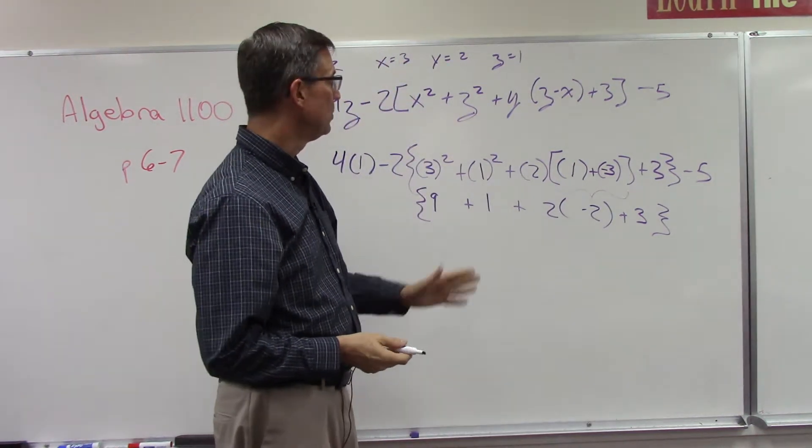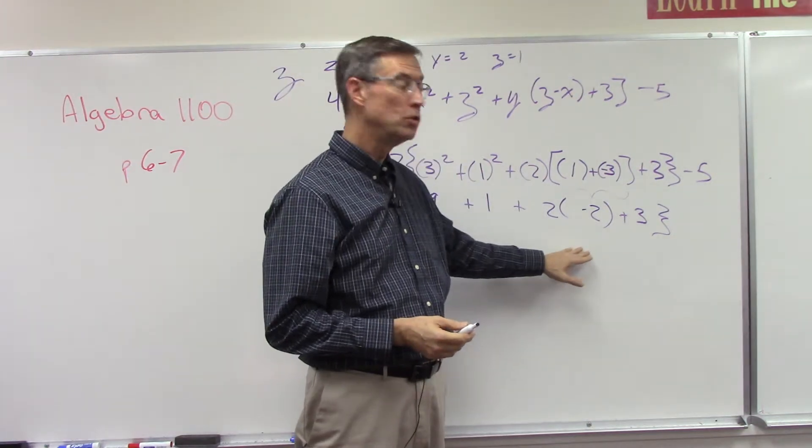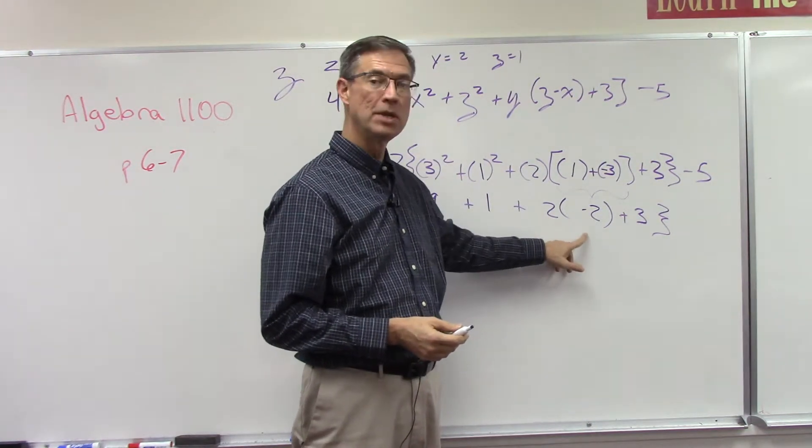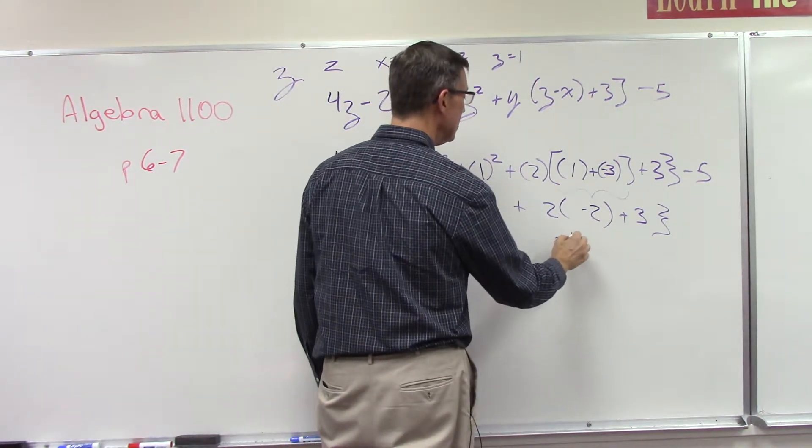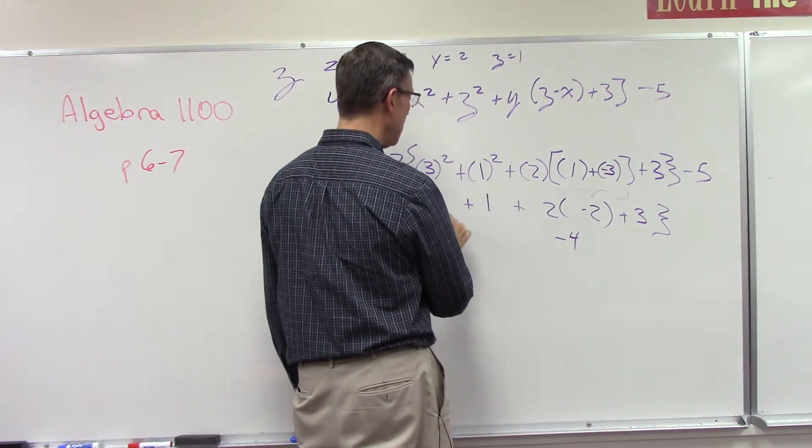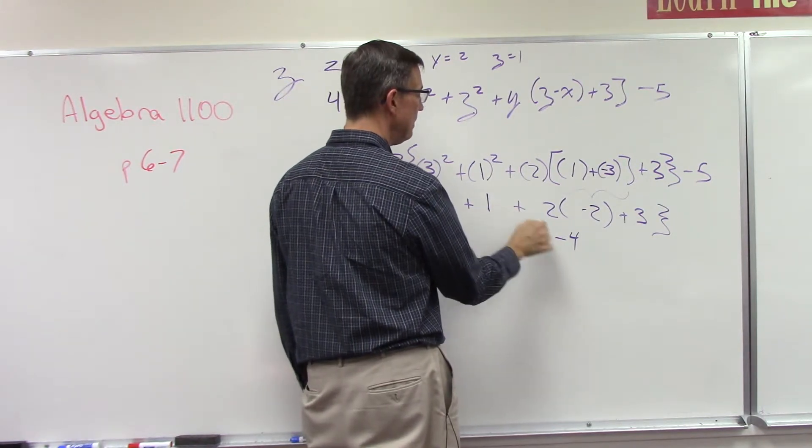Addition and subtraction? No, we need to do the multiplication next. So 2 times negative 2 is negative 4. So now I can add 9 plus 1 is 10, 10 plus negative 4 is 6, 6 plus 3.